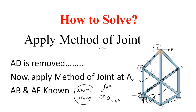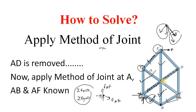At joint E, there are three members, but two of them are already known. So only one member is unknown, meaning we have room to provide one more unknown force there. Similarly, at joint C, the adjacent members are known, so there is only one unknown force — the force in CD — meaning we also have room for one more unknown there. So we should replace or relocate member AD at a position between E and C.